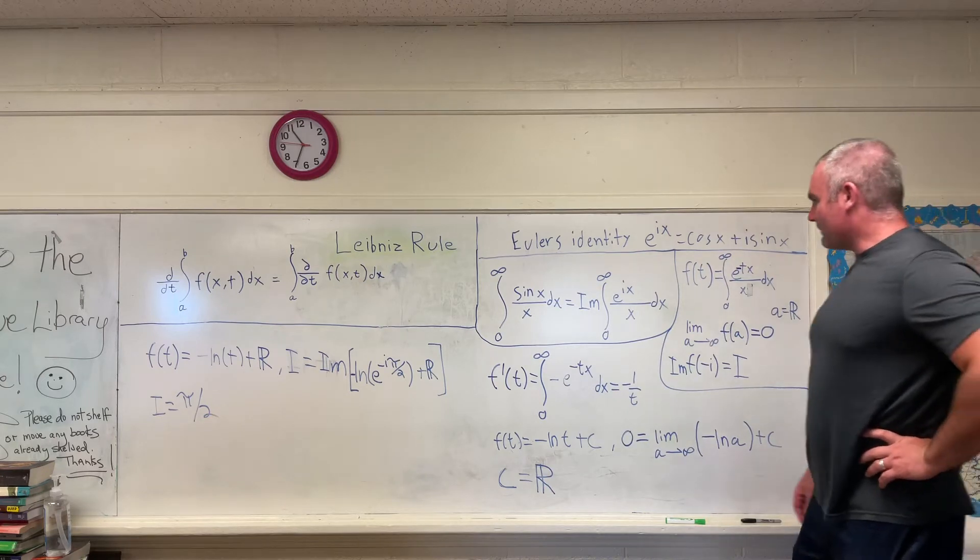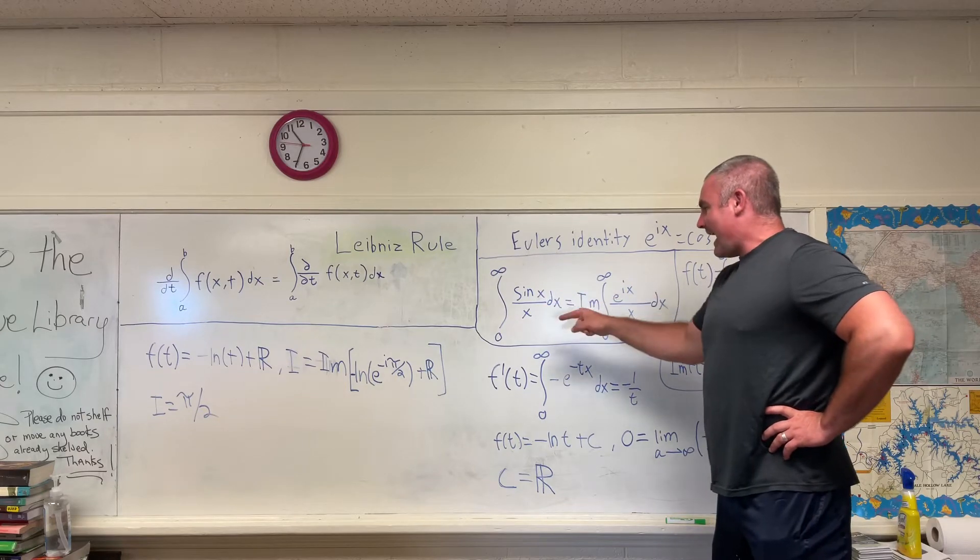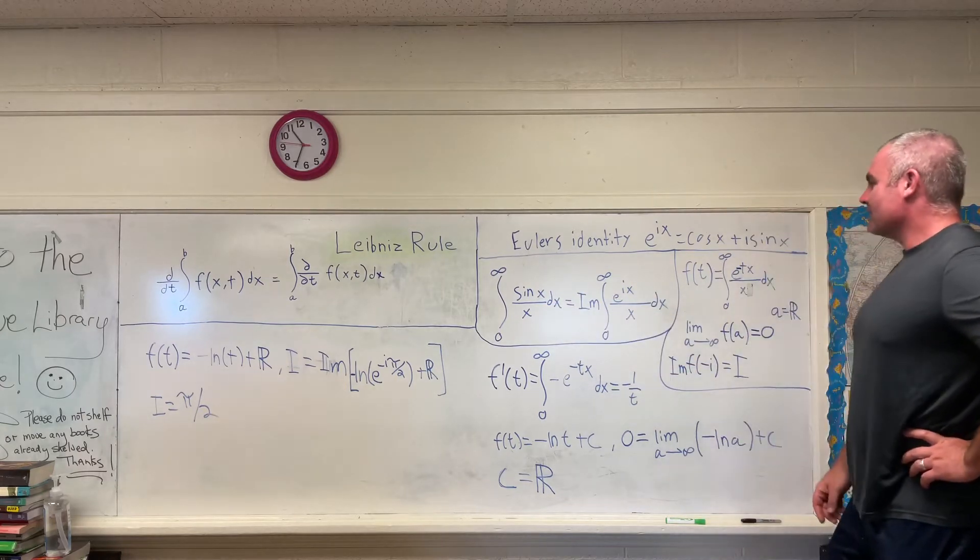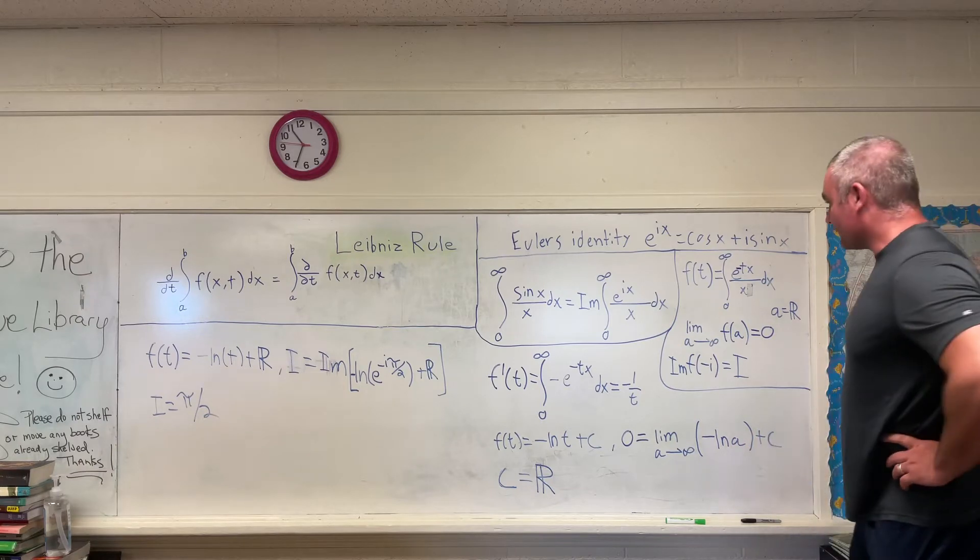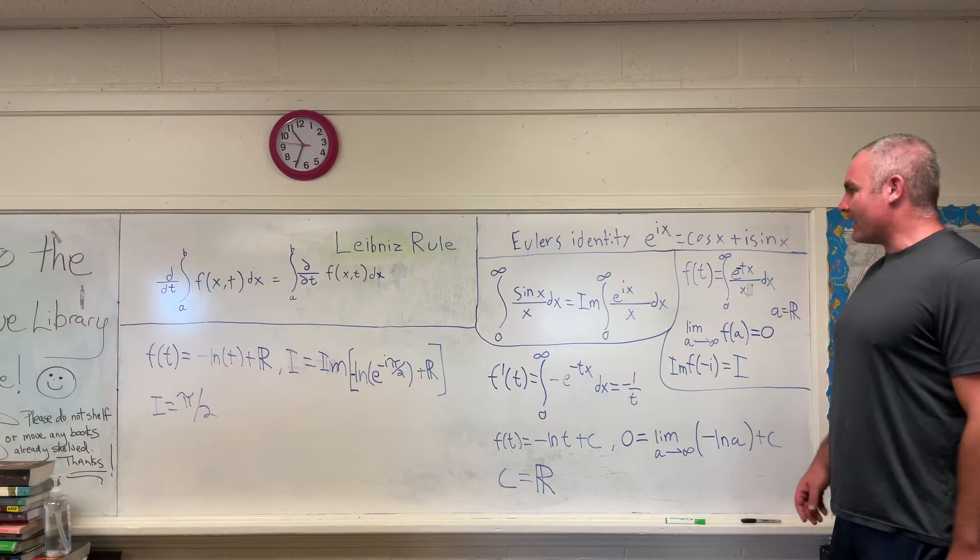I believe last time I proved that we actually had sine of ax over x dx, but it's always pi over 2. I think it was example number 3 if you want to see why that's true.